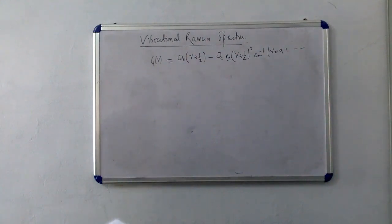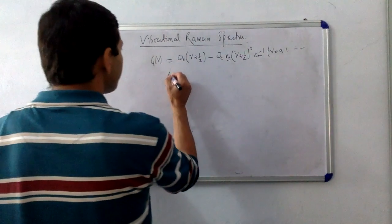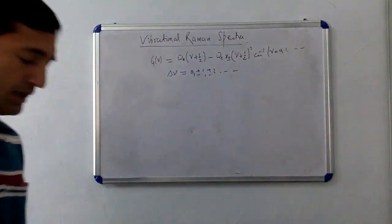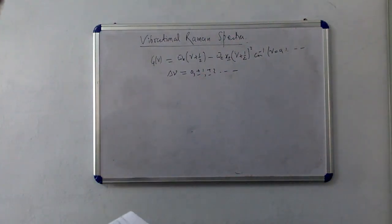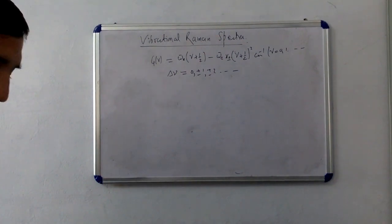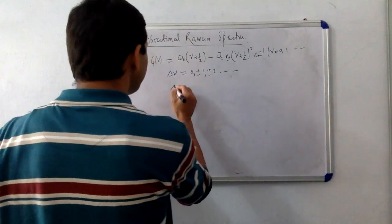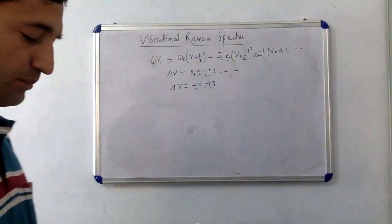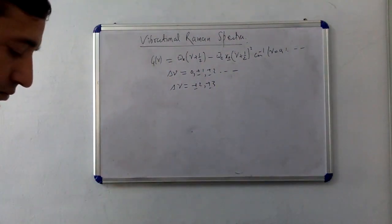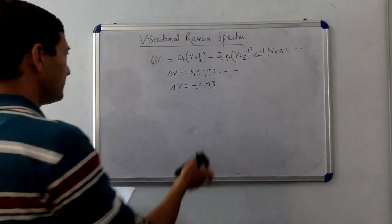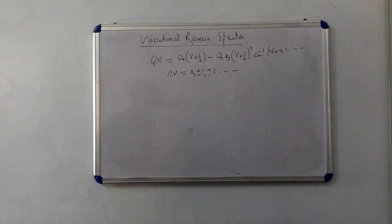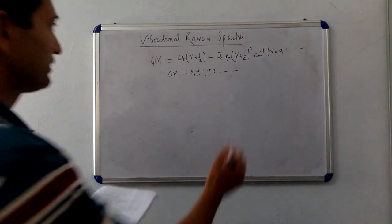This is a general expression regardless of the shape of the molecule. The general selection rules for vibrational states are Δν = 0, ±1, ±2, and so on. These remain the same for Raman spectroscopy. The probability of Δν = ±2, ±3 decreases rapidly. For Raman spectroscopy, where we have a Raman active mode, we can apply these energy level expressions.